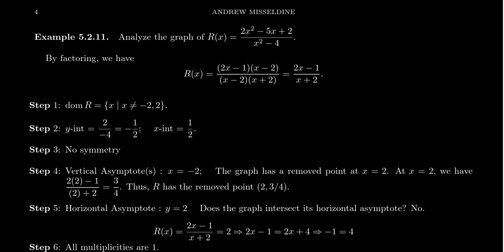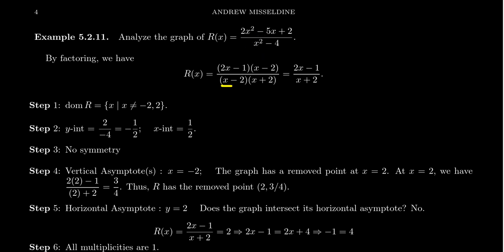To do this, I would begin by factoring the numerator and the denominator. The numerator is a little bit harder, so let's start with the denominator. x squared minus 4 is a difference of squares. It should factor as x minus 2 and x plus 2.